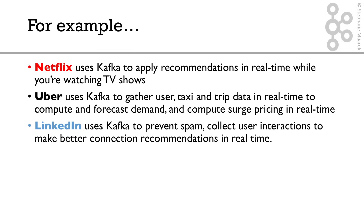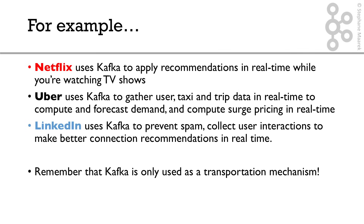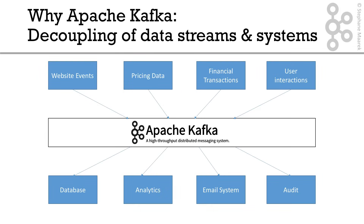All these companies are using Kafka so that they can make real-time recommendations, real-time decisions, and give real-time insights to their users. Remember that Kafka is only used as a transformation mechanism — people still need to write their applications to make things work. But Kafka is really good at making your data move really fast at scale. In the next lectures and the entire course, you're going to accumulate so much knowledge and practice around Kafka. I hope you're excited — I will see you in the next lecture.